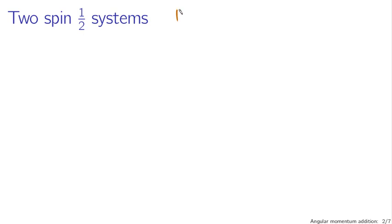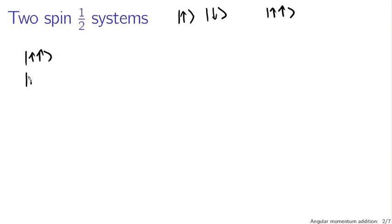Spin one-half systems, you know how they behave — they're either going to be up or down. And if I'm going to have two spin one-half systems, I'm going to write that as two arrows inside my ket. So up-up, or up-down, or whatever. The possibilities that we have, if we've got two up spins, two down spins, one up, one down, etc., are either up-up, up-down, down-up, or down-down — the four possibilities for either up or down.